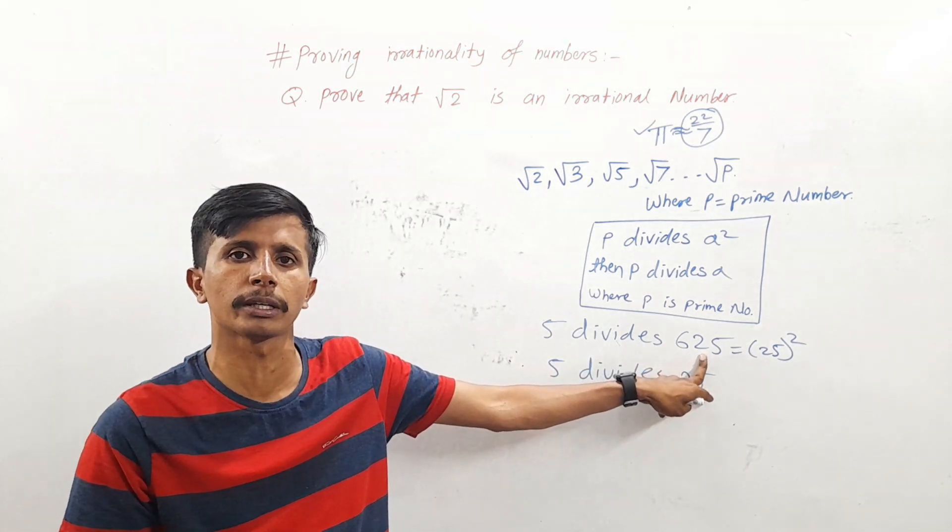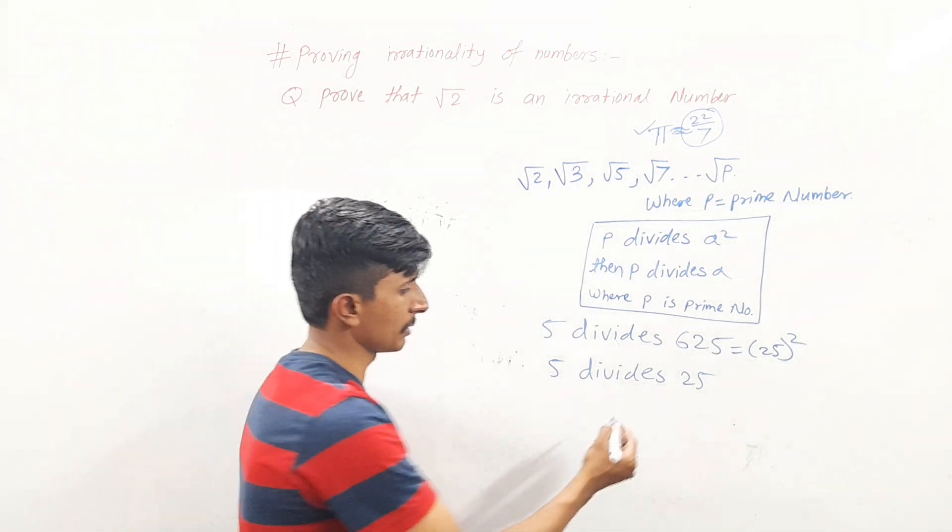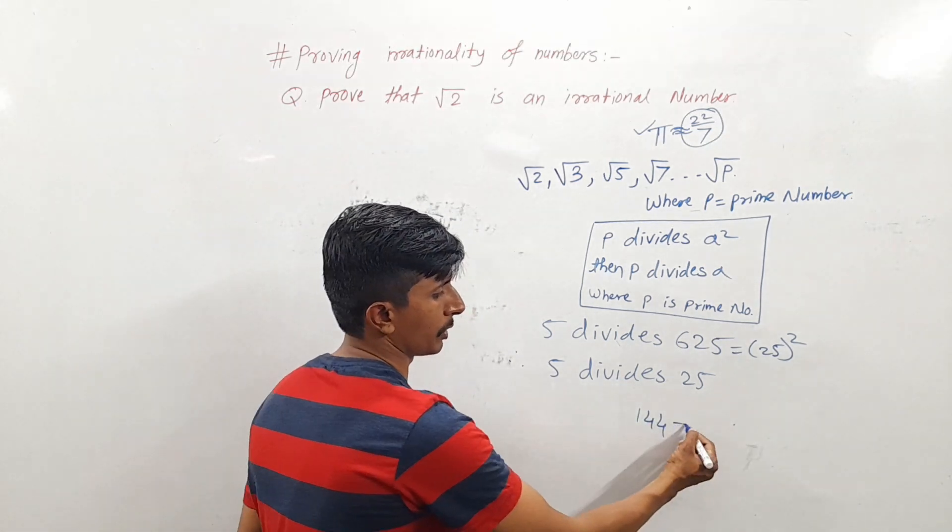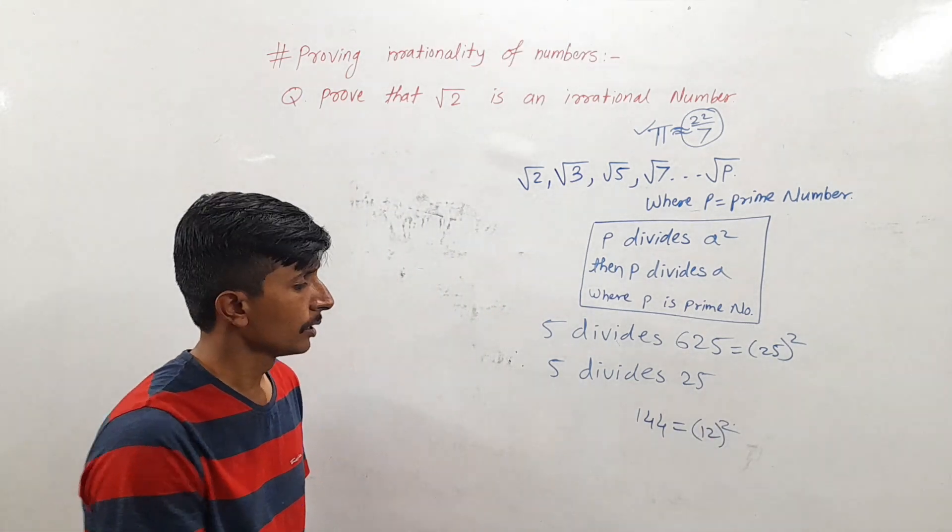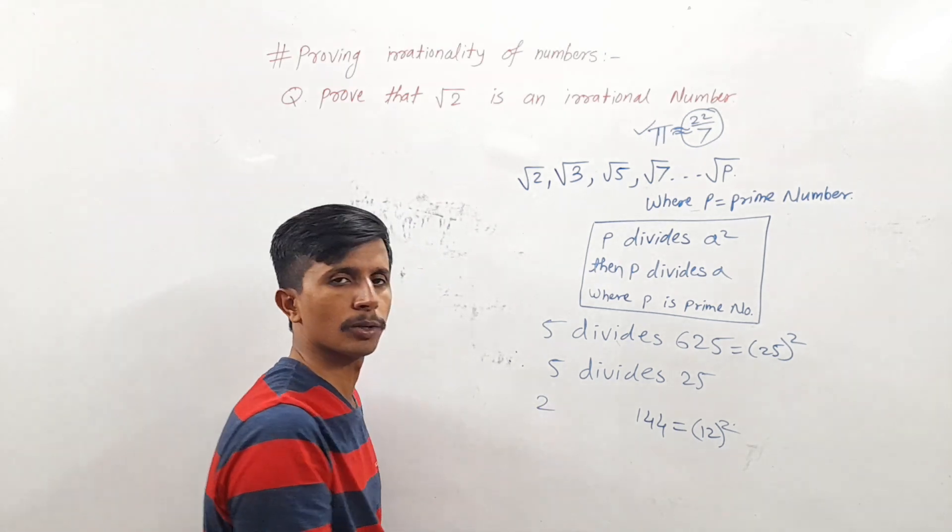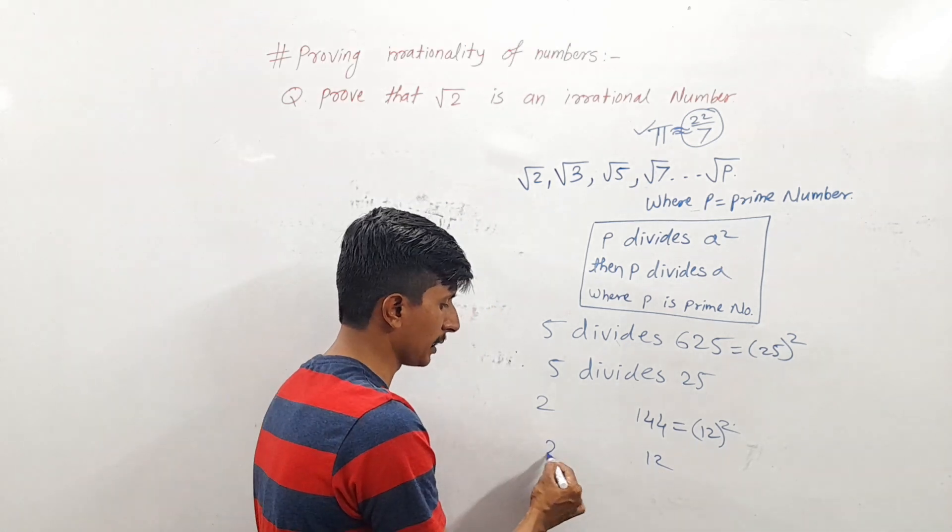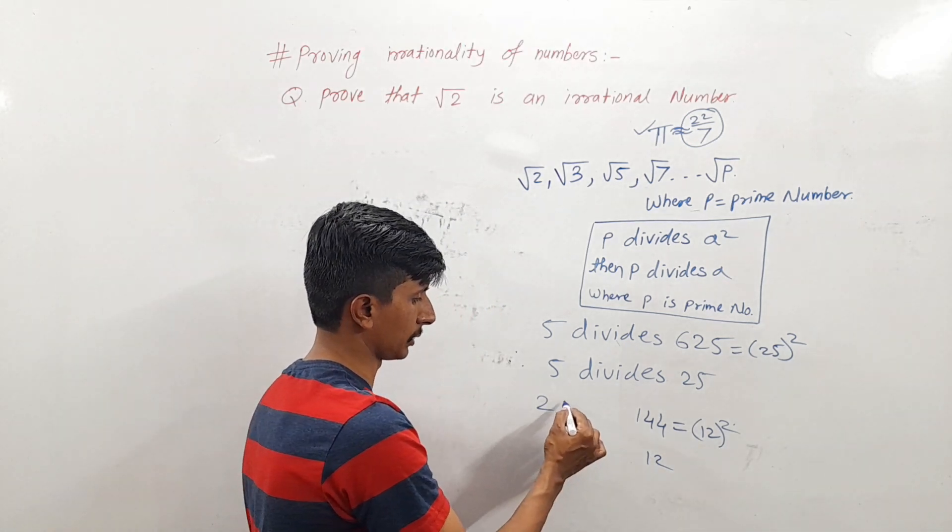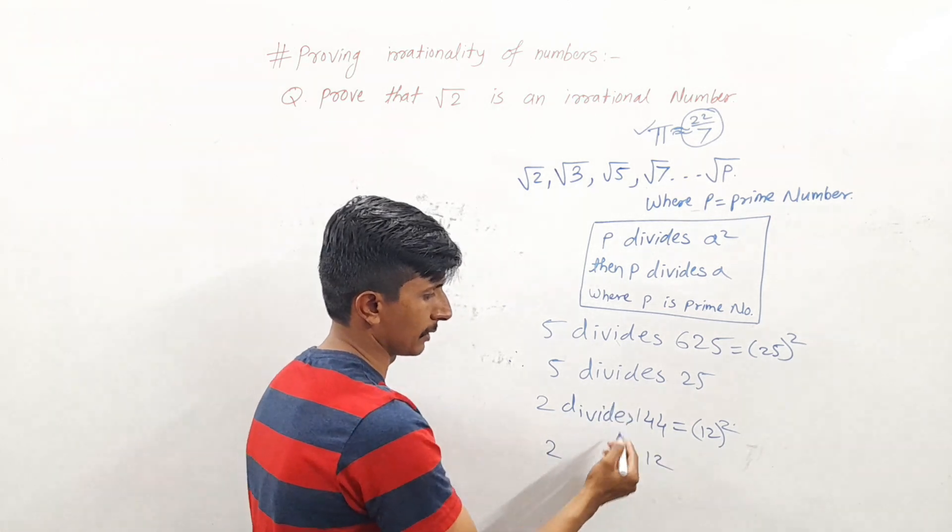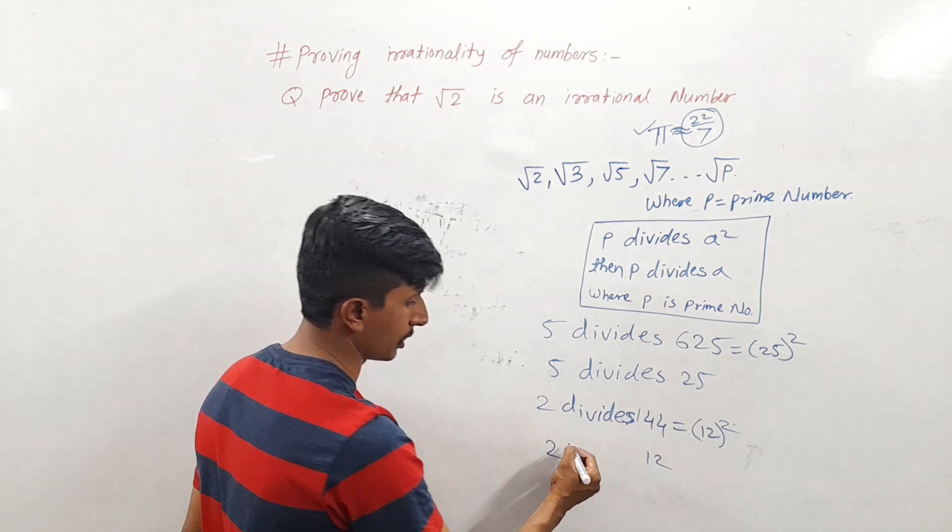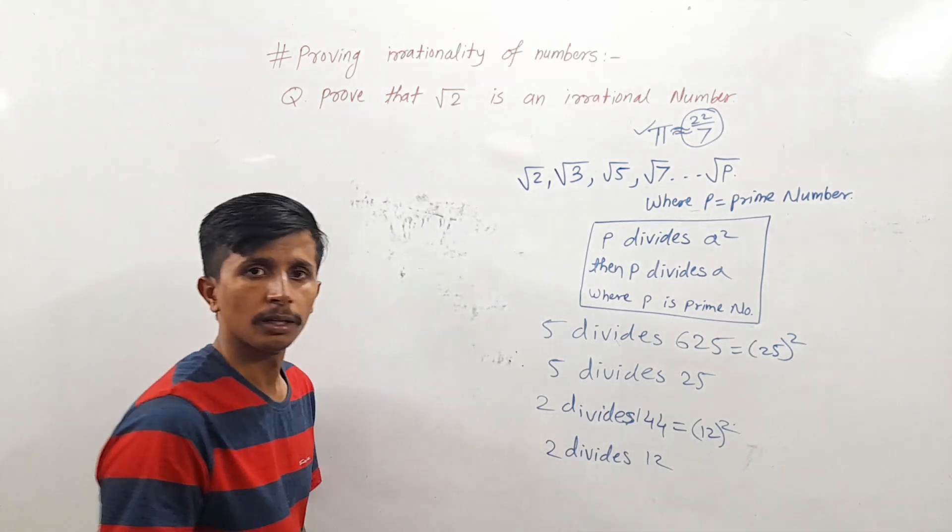Another example: 144. 144 is the square of 12. 144 is also divisible by prime number 2. So here we can say that 2 divides 144, therefore 2 divides 12.